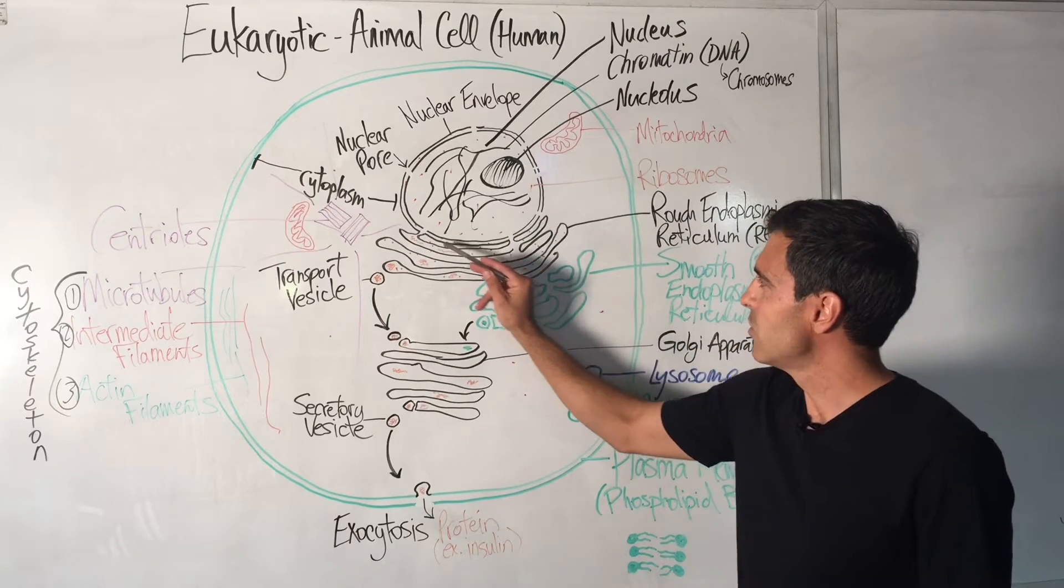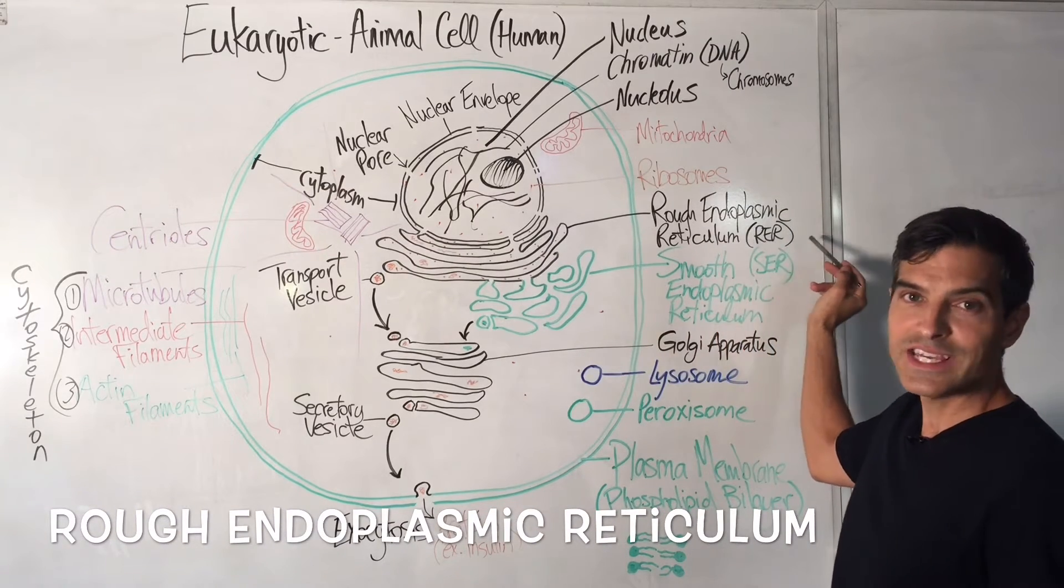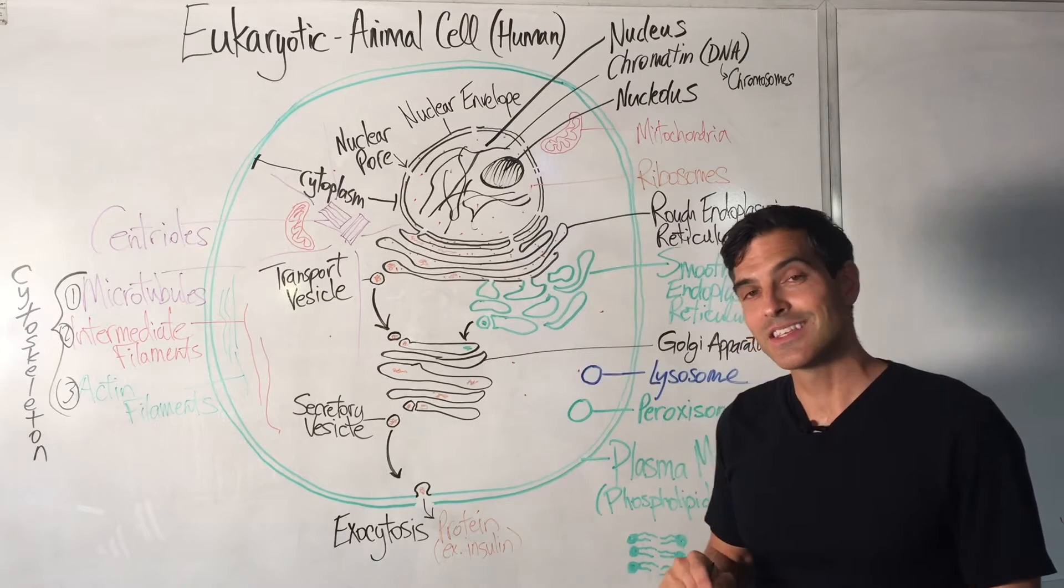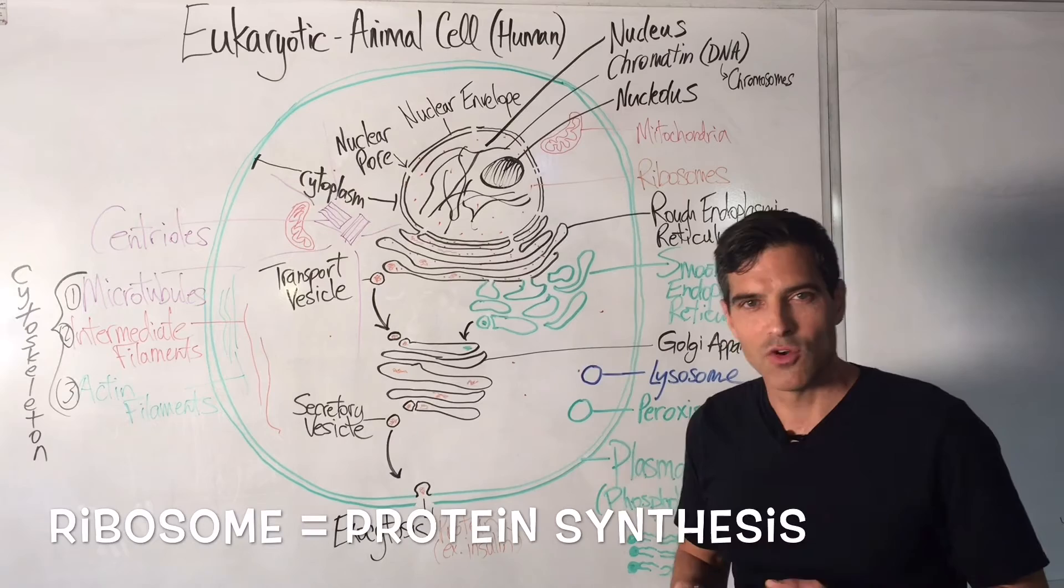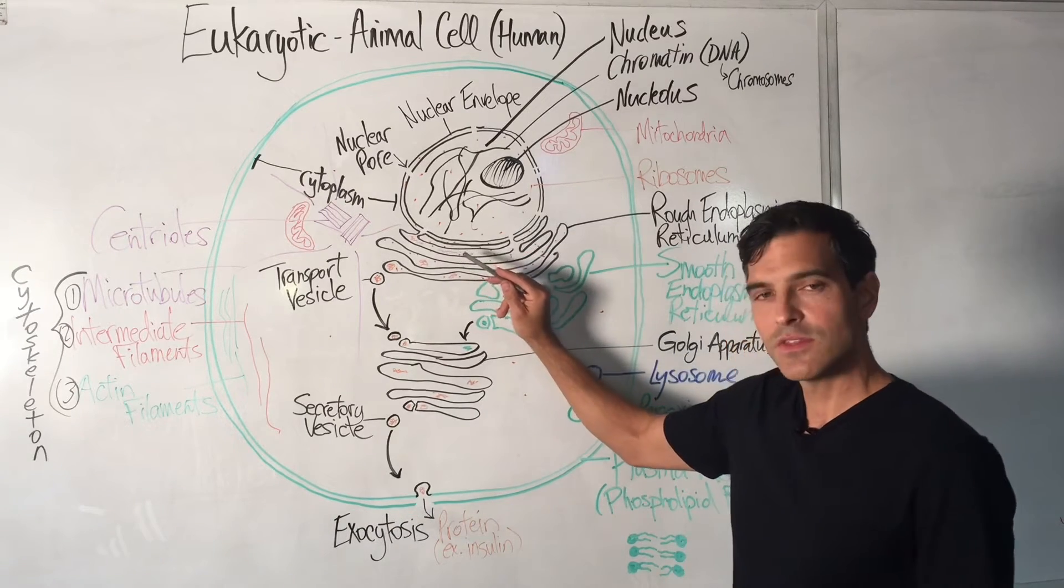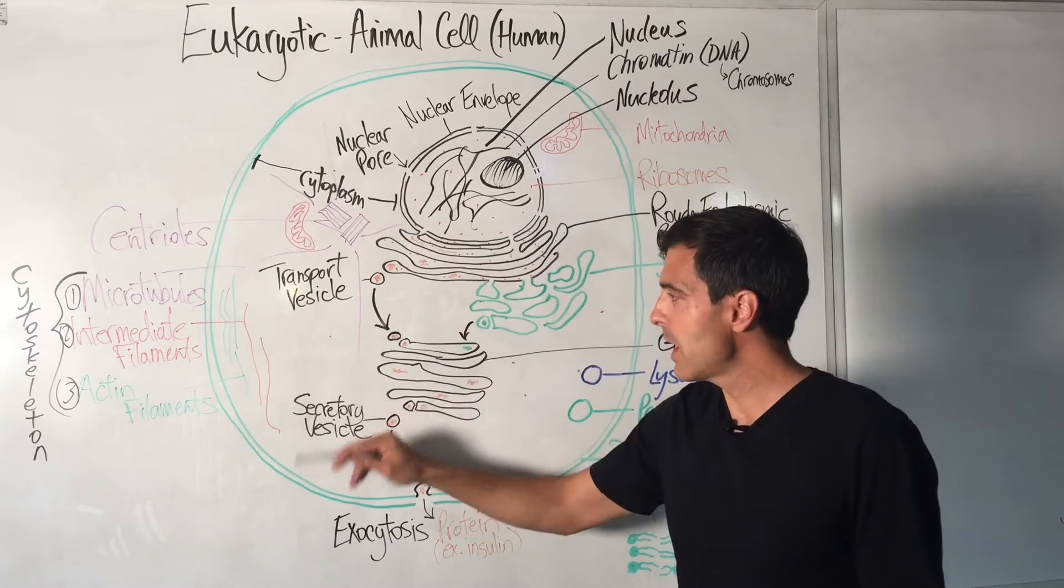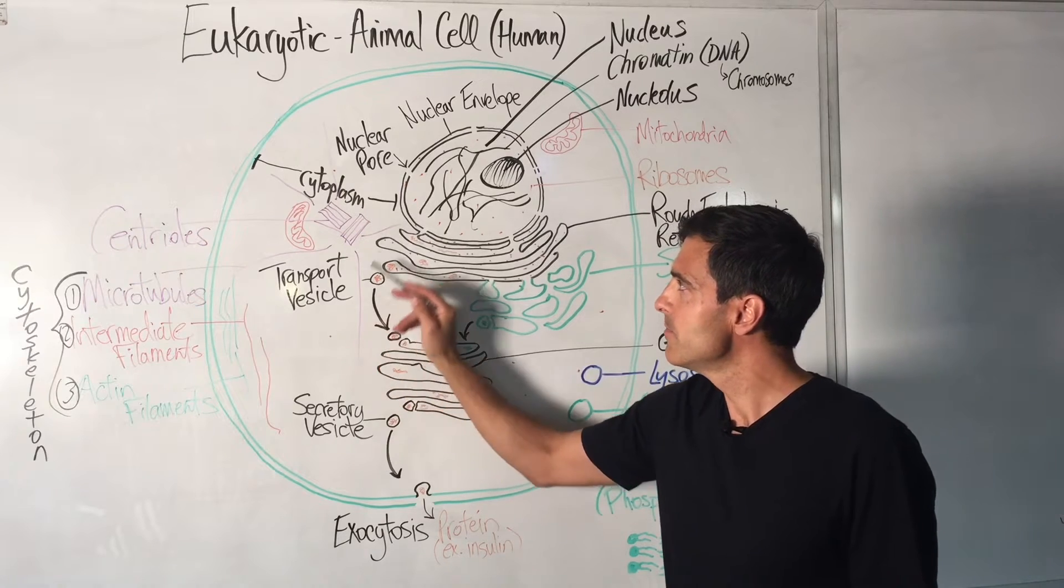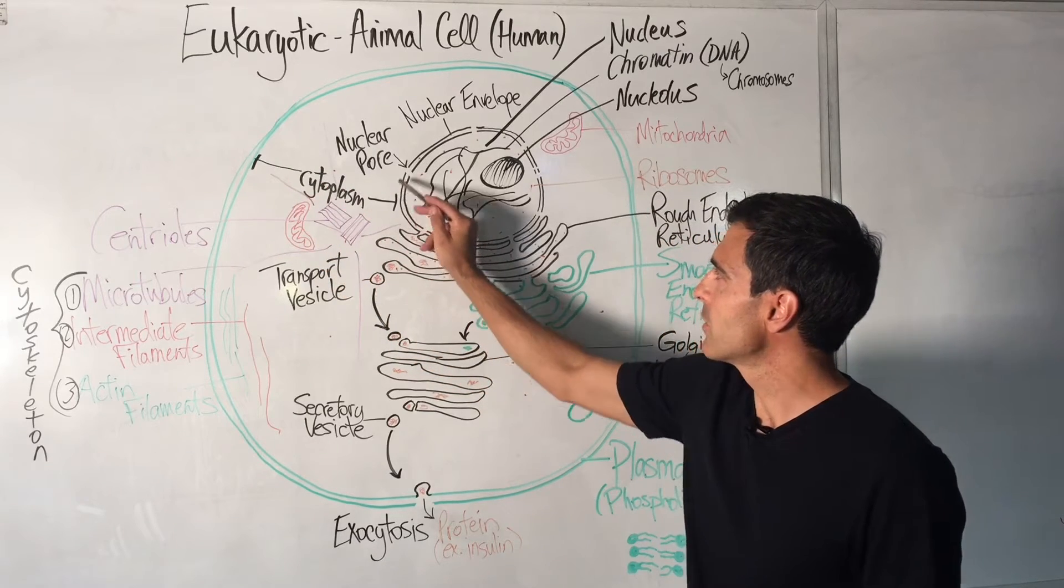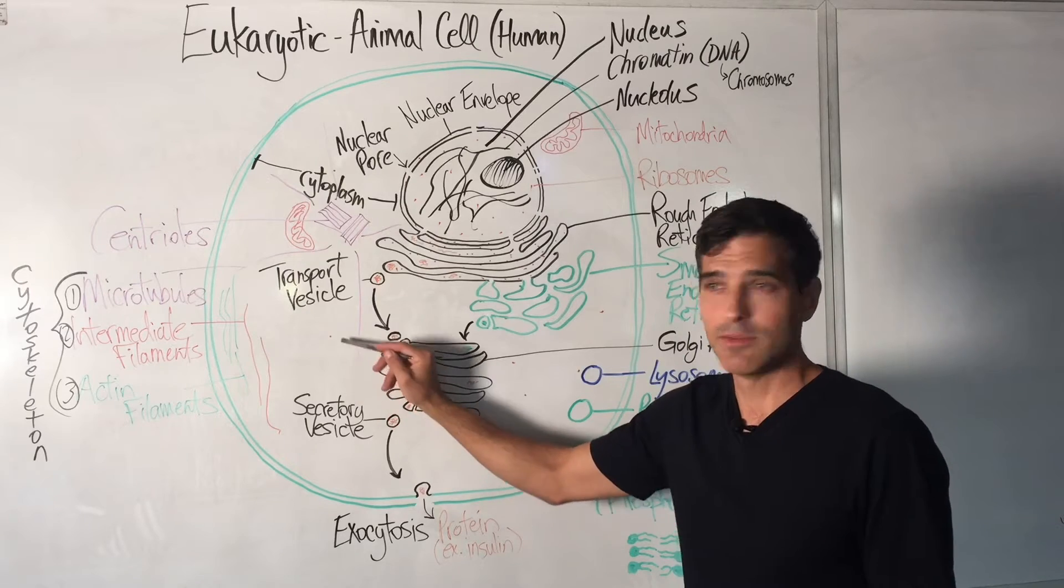The ribosomes are located in the rough endoplasmic reticulum, or RER. This is where protein synthesis happens. Whenever you think of ribosome, please think of protein synthesis. Protein synthesis doesn't only occur in the rough endoplasmic reticulum. It could occur outside in the cytoplasm. As you see, the cytoplasm is everything from the plasma membrane to the nuclear envelope. Protein synthesis could even happen right here in this free ribosome.